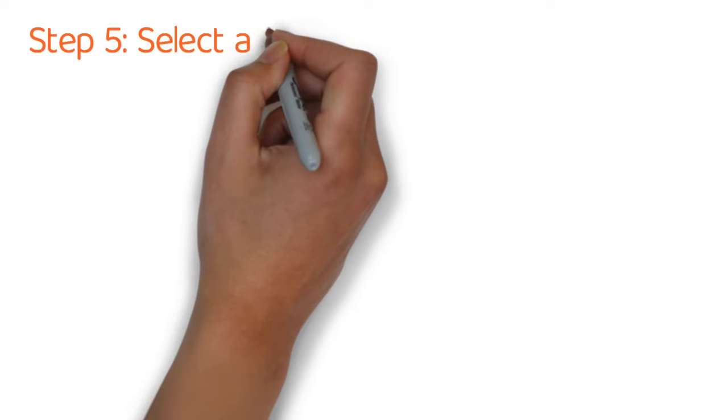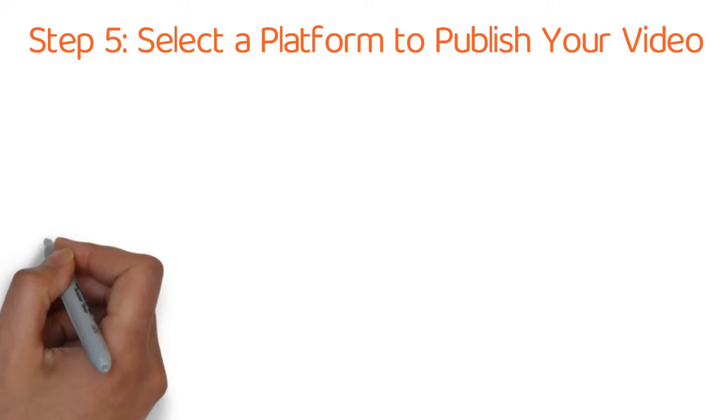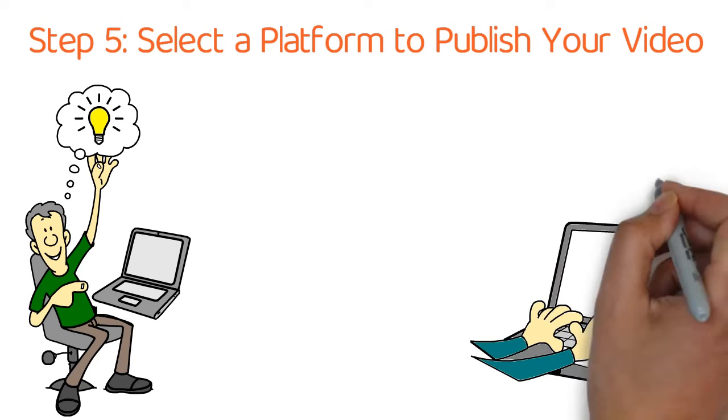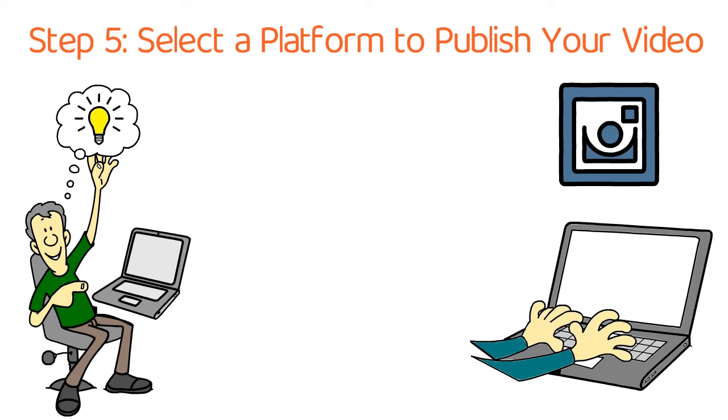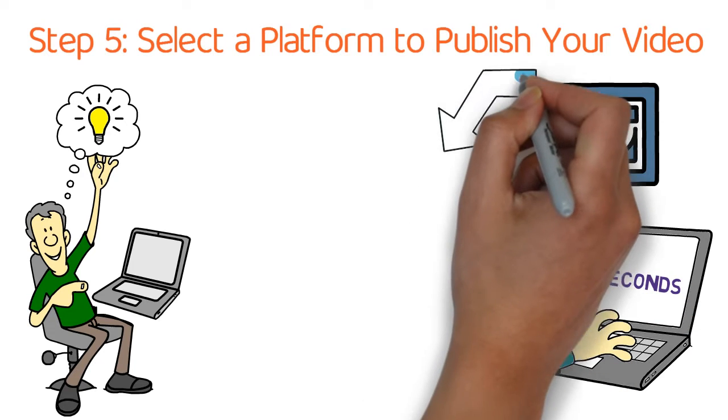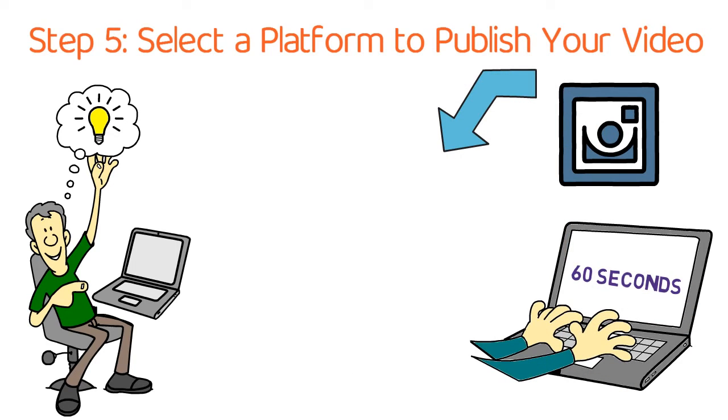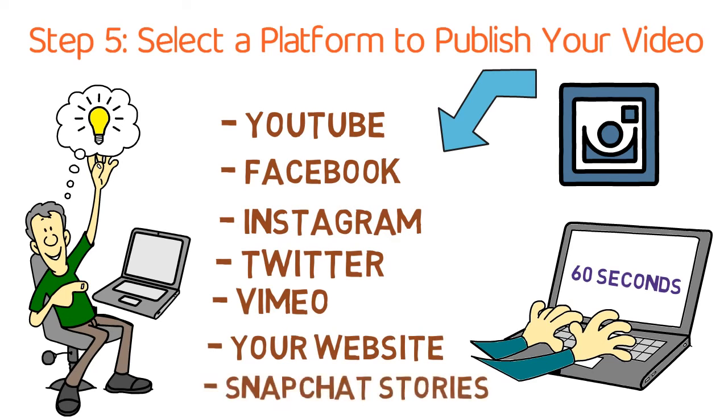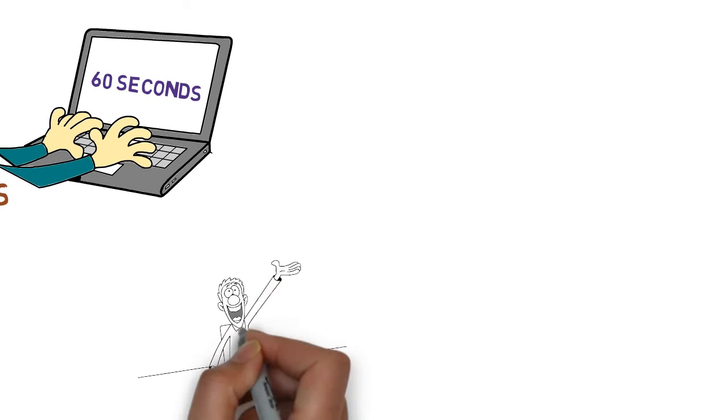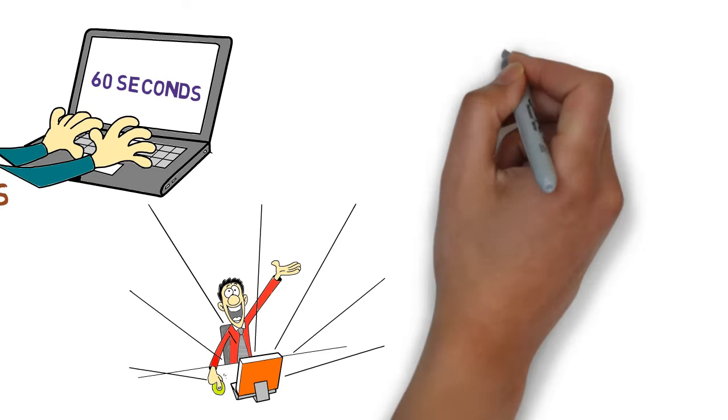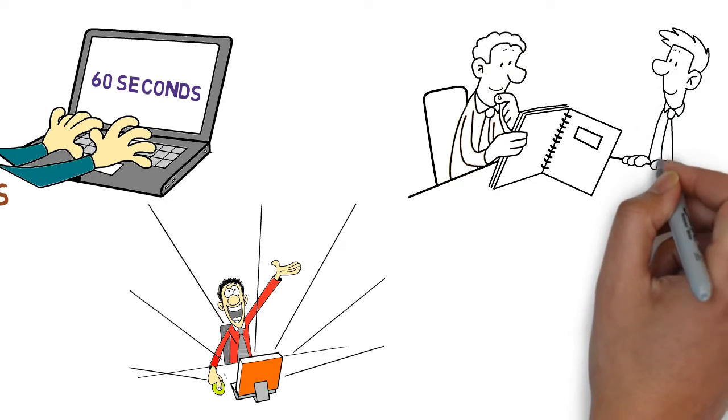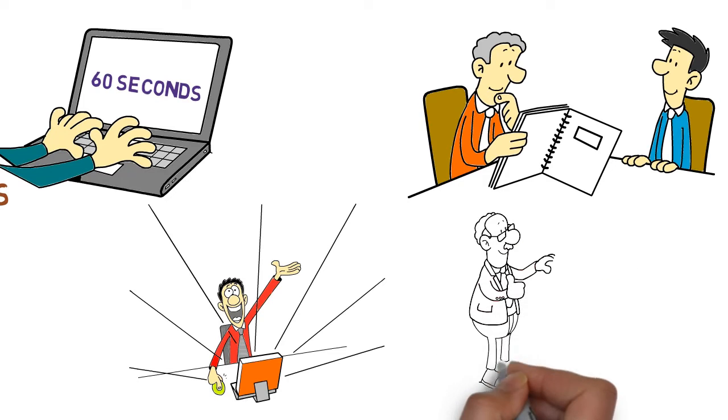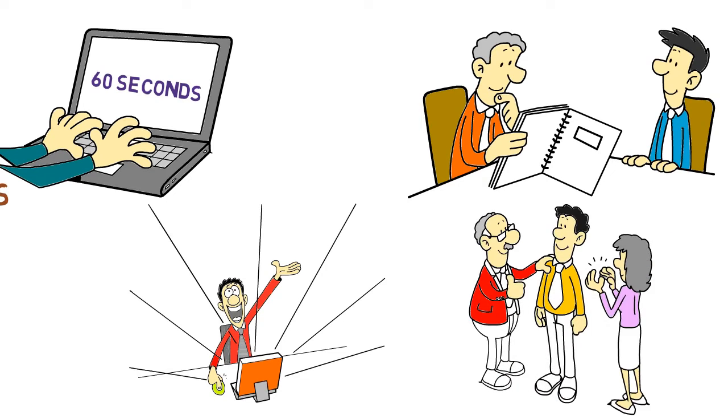Step 5. Select a platform to publish your video. You need to have an idea of where you want to post your video so you can tailor the video accordingly. For instance, Instagram videos can't be any longer than 60 seconds. Here are the main platforms you should consider posting your video on: YouTube, Facebook, Instagram, Twitter, Vimeo, your website, and Snapchat stories. Remember to look back at your goals for video marketing and also remember your target audience. This will help you determine which platform is best. Sometimes it might be best to just focus on one platform for now and you can always expand and repurpose your videos for other platforms at a later time.